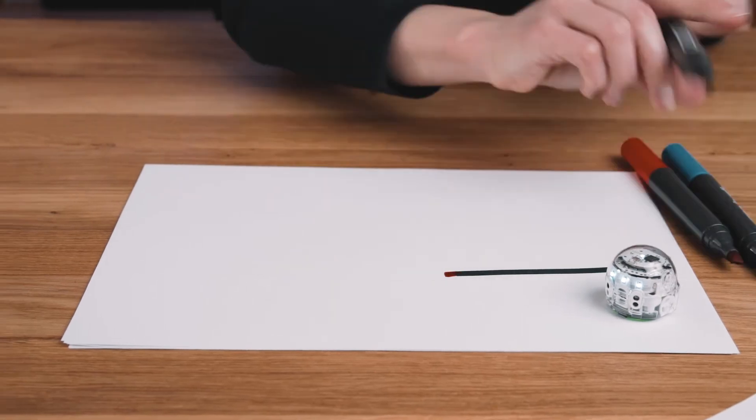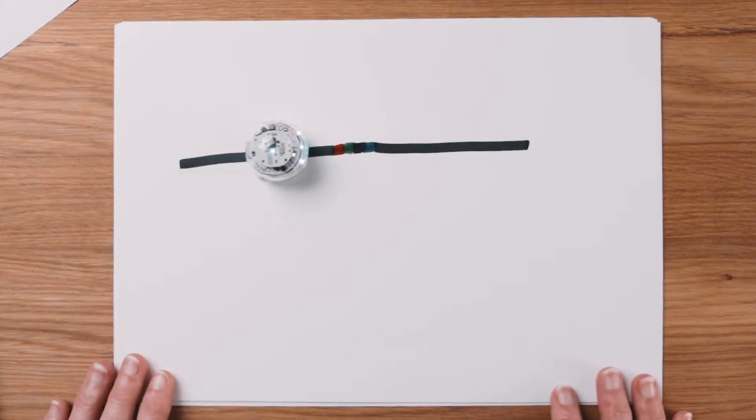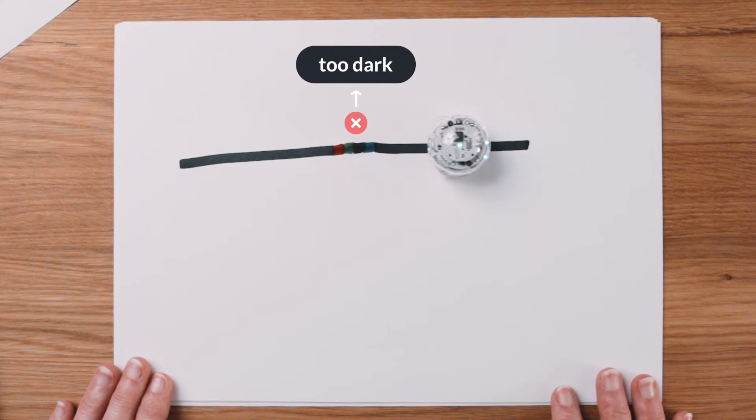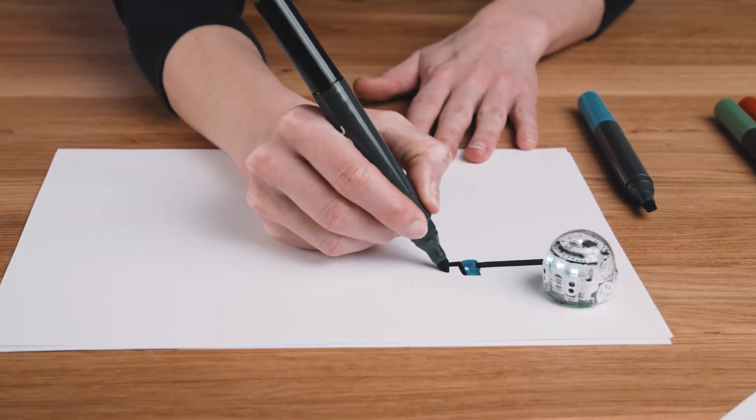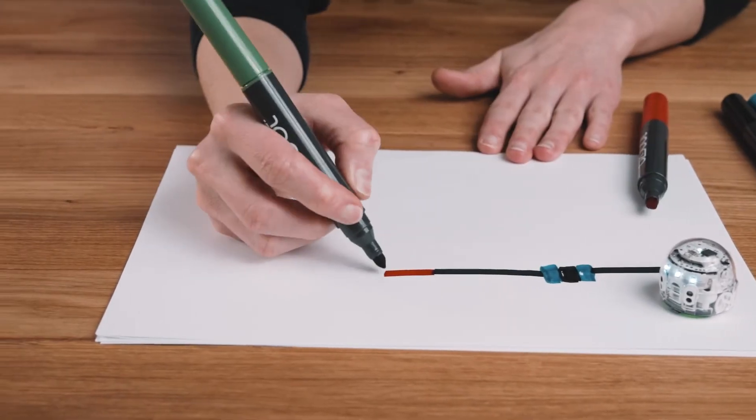Evo won't be able to read color code squares that are too dark, so try to draw them in a single stroke. Code shouldn't be any wider than the line that they're on.